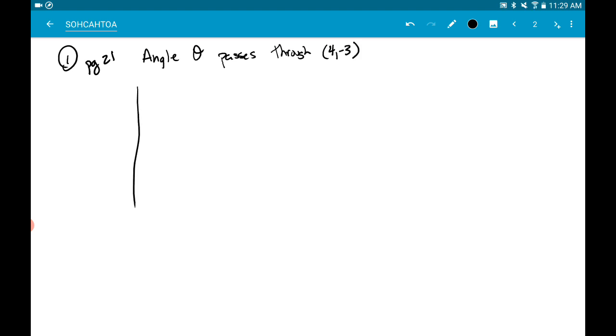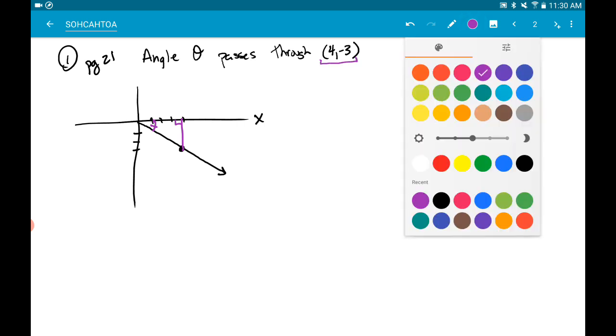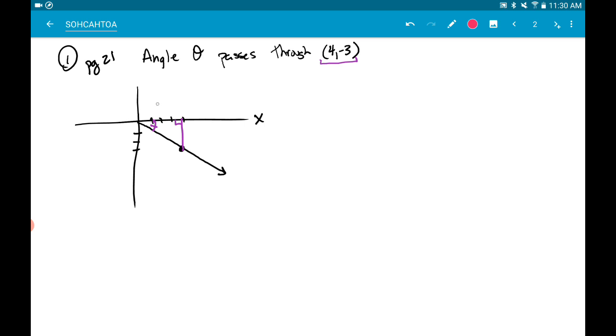So when we sketch this, here's my x-axis, and 4, negative 3 would be a point right here. When you have this terminal side that passes through there, it's defining an angle, which is just a slightly different thing. But if you put a triangle in here or you think about the reference angle, then we can create this right triangle. And because we were given a point 4, 3, we actually have a couple of these side lengths. This side is 4 units, and then when we went down 3, this side would be 3 units.